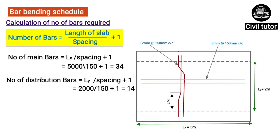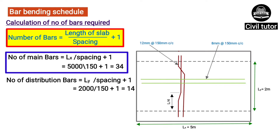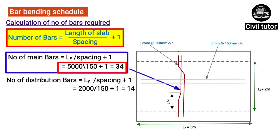For preparing the bar bending schedule, first we need to calculate the number of bars required. The formula is: number of bars = length of slab ÷ spacing + 1. Number of main bars = span Lx ÷ spacing + 1 = 5000 ÷ 150 + 1 = 34. Hence we require 34 number of main bars.